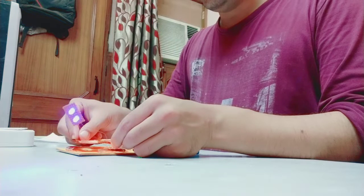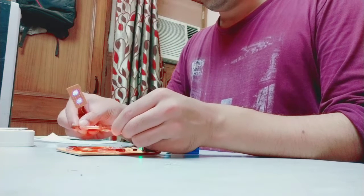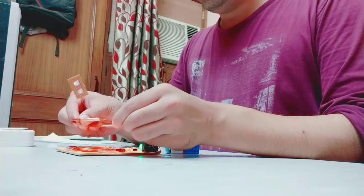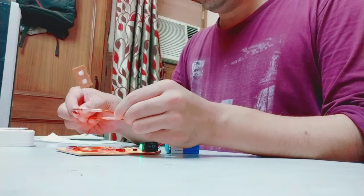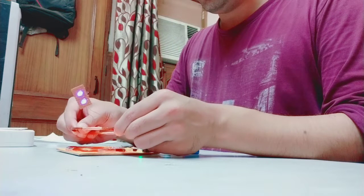You will also notice that as I recede away from the primary coil, the LED light dims out. So this light glows from quite a distance, somewhere around 3cm.